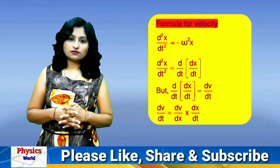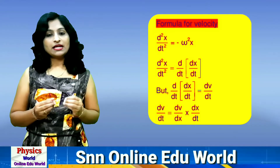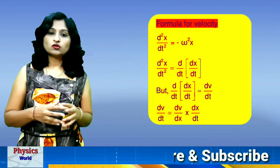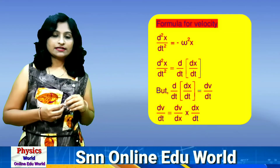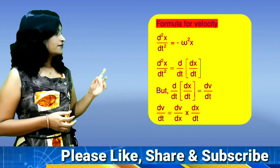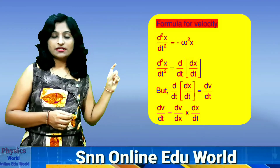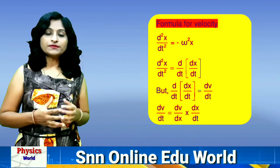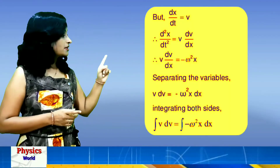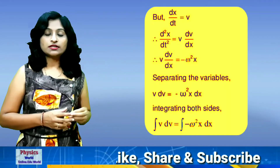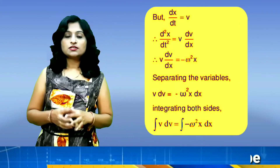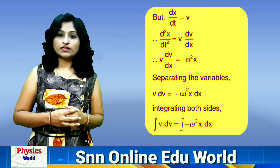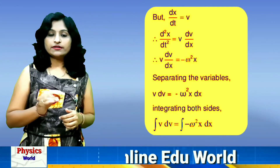Just rearrange this equation. For rearranging, we multiply and divide by dx. So we get dv/dx and dx/dt. Here, multiplying and dividing dv/dt by dx gives us dv/dx and dx/dt separately. Since dx/dt is the rate of change of displacement — that is, velocity v — this term converts to v·dv/dx. So ultimately the LHS d²x/dt² is converted to v·dv/dx.